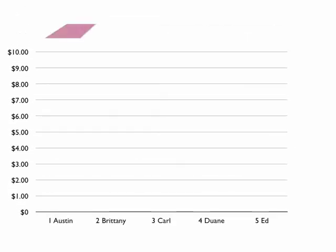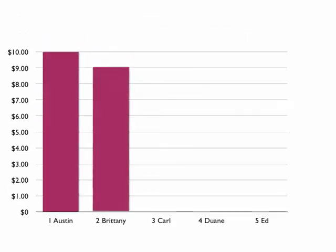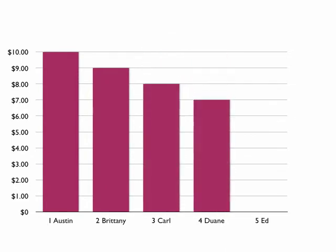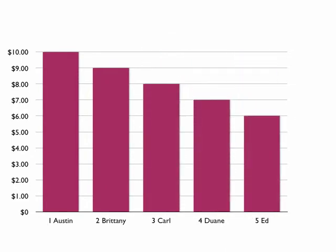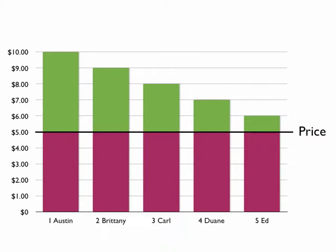We'll show Austin at $10, Brittany at $9, Carl, Duane, and Ed. Now the question is, what if pizzas were priced at $5 apiece? How could we calculate consumer surplus? Consumer surplus is simply the difference between what individuals are willing to pay — the highest price they're willing to pay — and what the actual price is. In the case of each one of these customers, that area is represented by the green area of the chart.